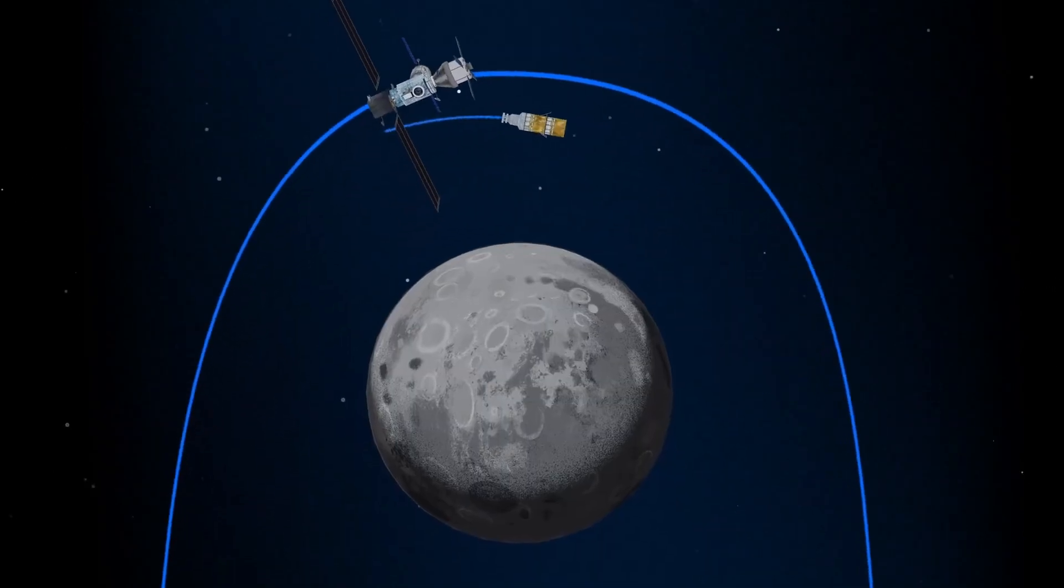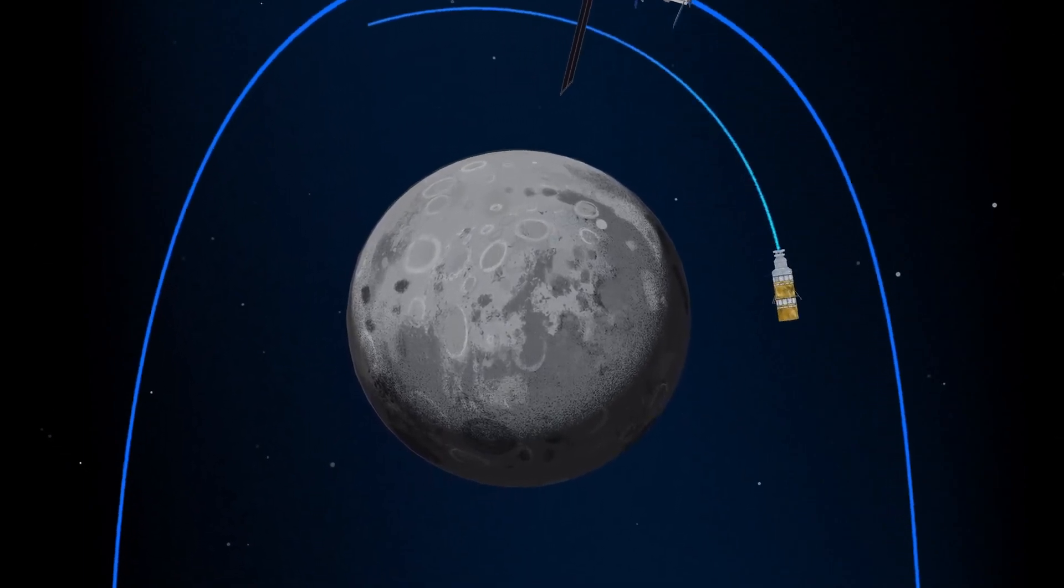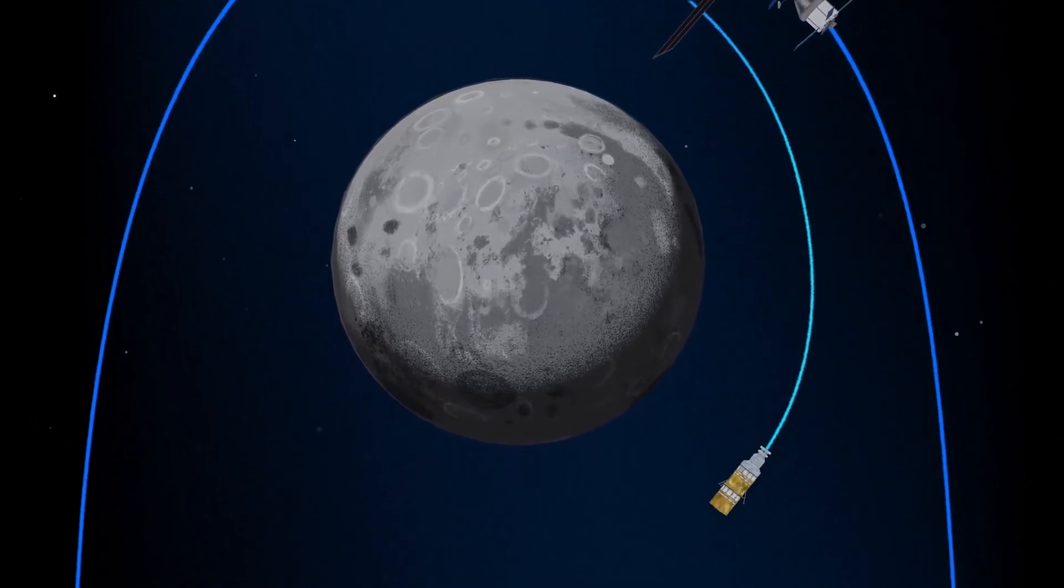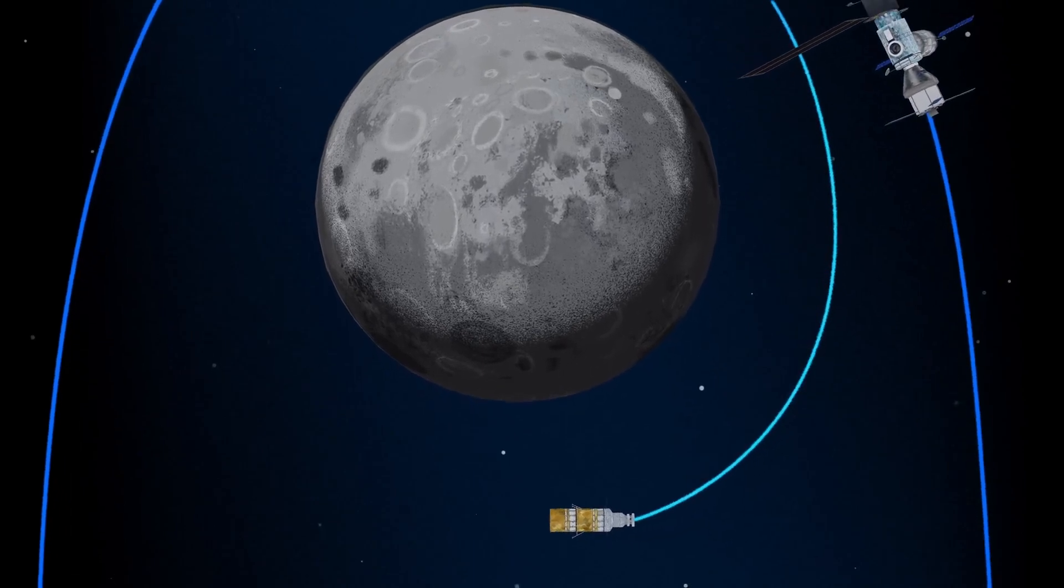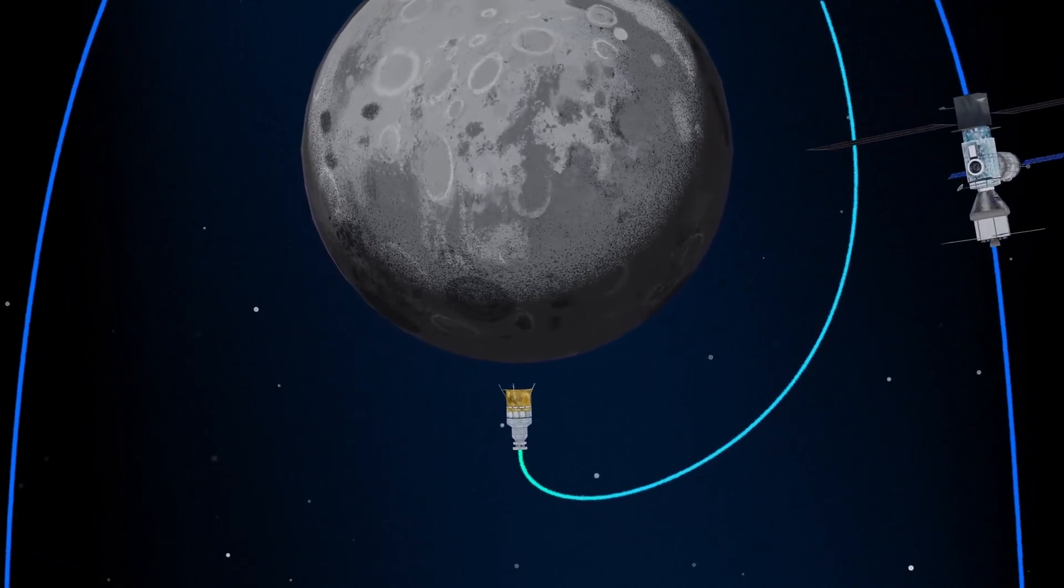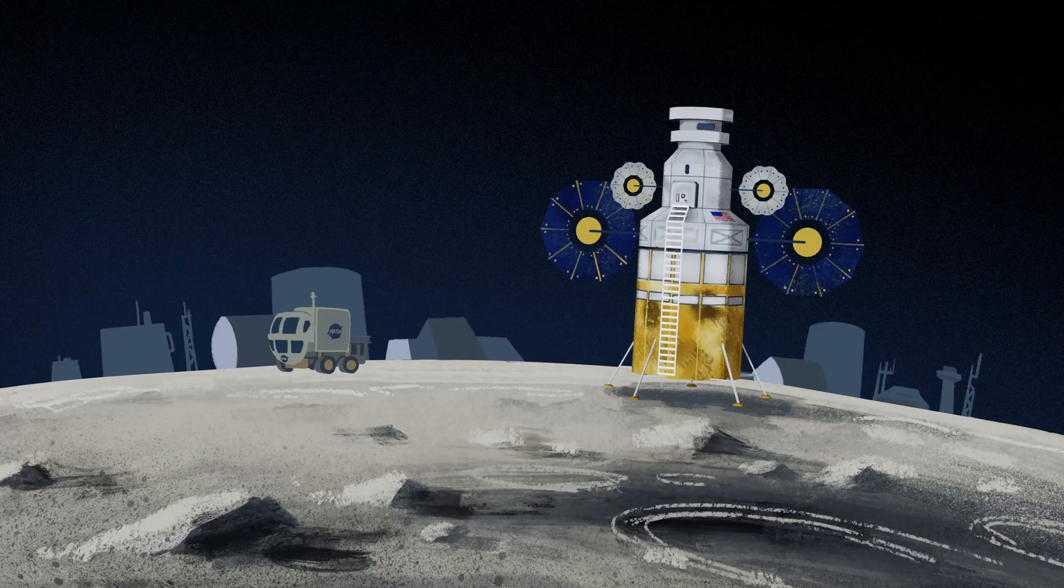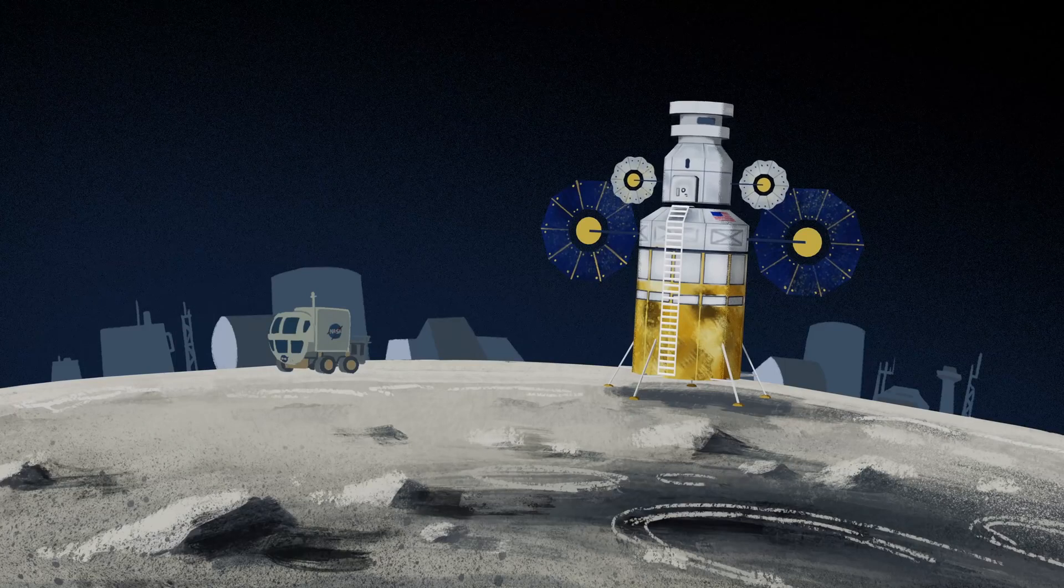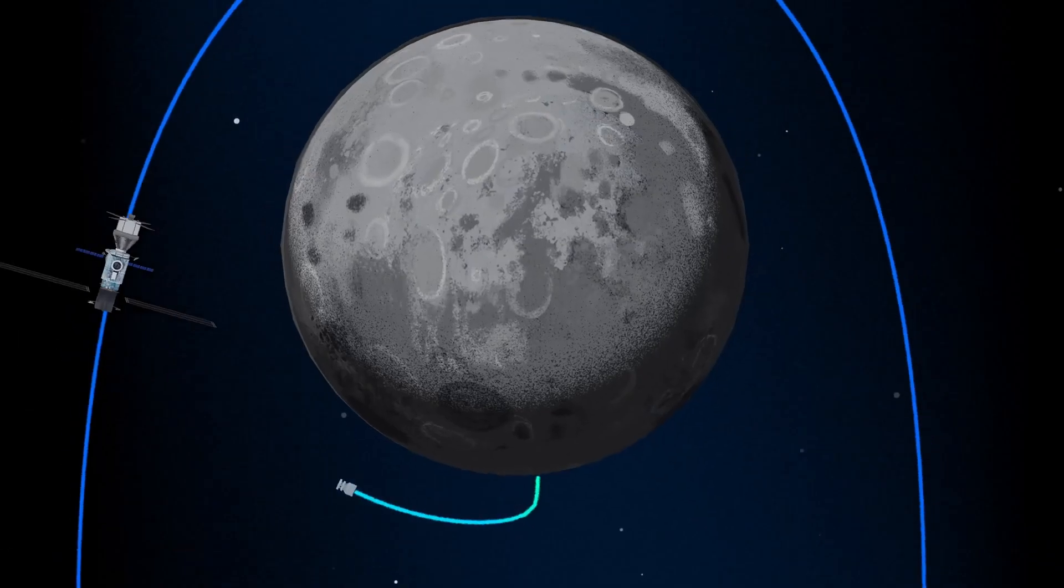The lunar lander system itself is built for three unique steps: descending from the halo orbit of Gateway down to a low lunar orbit, descending from low lunar orbit to the surface, and once the lunar mission is complete, launching from the surface of the Moon and ascending all the way back to the orbiting Gateway.